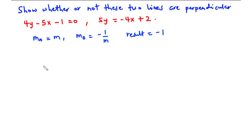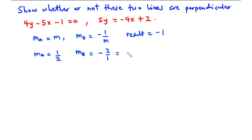Let's take a typical scenario. If the gradient of line A is 1 over 2, then the gradient of line B is the negative reciprocal — we flip 1 over 2 to get 2 over 1, and because it is the negative reciprocal, we have negative 2. Now multiplying: 1 over 2 times negative 2 — the 2s cancel, giving 1 times negative 1, which is negative 1. So it follows that these two lines are perpendicular to each other.